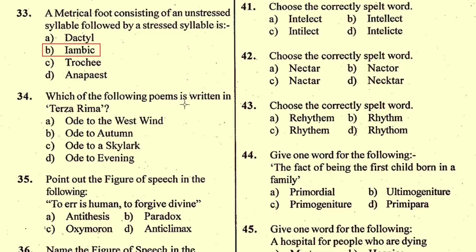Question number 34: Which of the following poems is written in terza rima? The poem 'Ode to the West Wind' consists of five sections written in terza rima. Each section consists of four tercets with the rhyme scheme ABA BCB CDC DED, and a rhyming couplet EE. The ode is written in iambic pentameter. So the right option is A, 'Ode to the West Wind'.